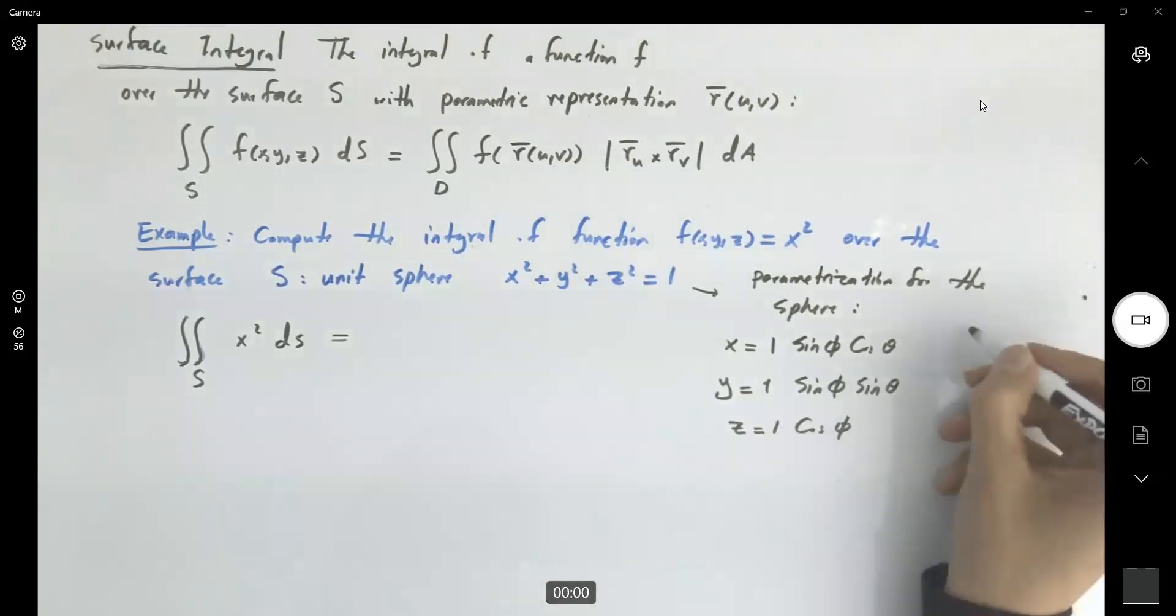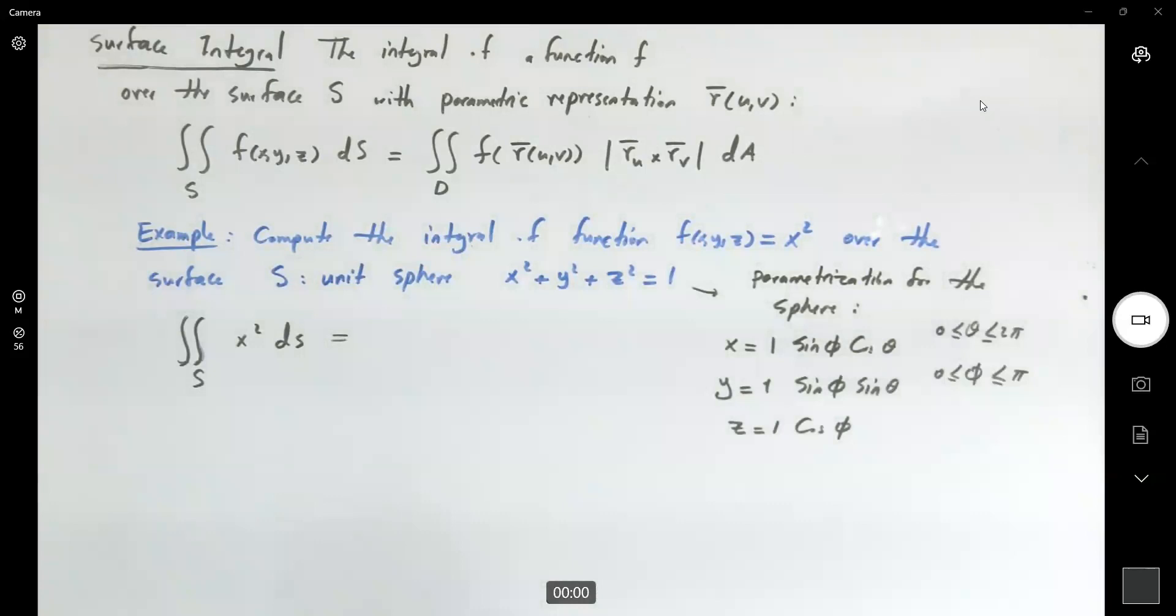Very good. θ ranges between 0 to 2π, and since we don't have any restriction on φ, it ranges between 0 to π.